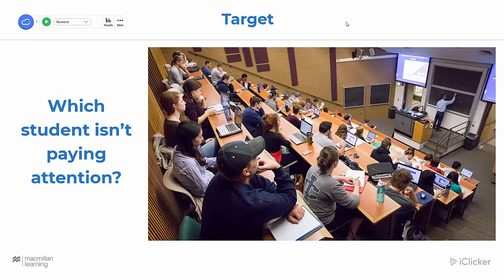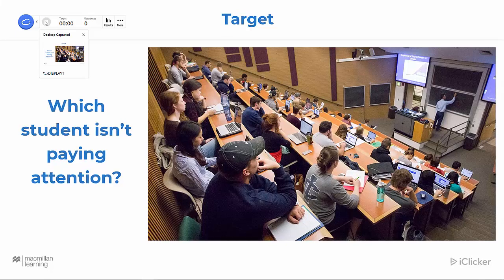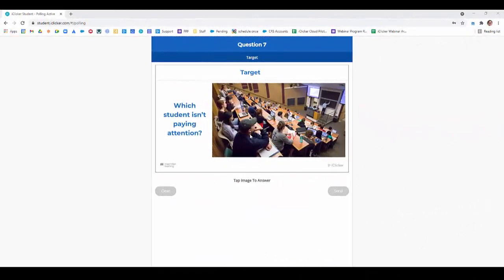So this is a target question. With a target question, students are sent an image and they are asked to touch a place on the image to indicate where their correct answer is. Just go ahead and change this to target, and then hit the play button. It captures your desktop and sends it to students. The student simply touches where on the image they feel the correct answer is, and then clicks send when they're satisfied.